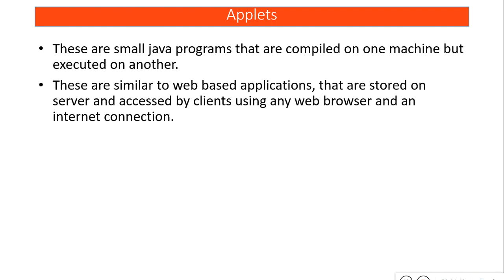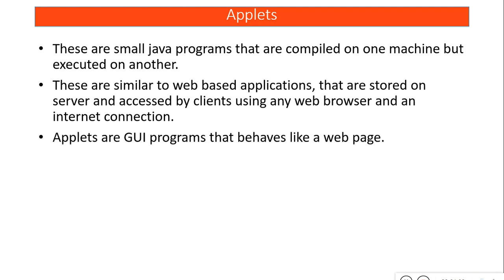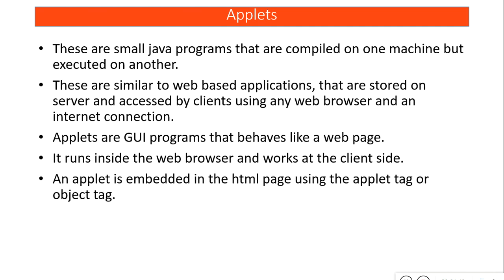Simply put, we use applets to create web-based applications. They are stored on the server and accessed by the client using a browser like Google Chrome, Internet Explorer, Edge, or Mozilla Firefox. Using a browser you see your web-based applications, similarly for applets — we'll create them in Java and view them in a web browser. Applets are GUI programs that behave like a web page.